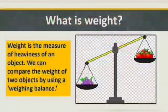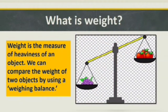What is weight? Weight is the measure of heaviness of an object. We can compare the weight of two objects by using a weighing balance. Look at this weighing balance — it has two pans. The pan which is at a lower level has more weight, and the pan at a higher level has less weight in comparison to the first one. Here, a bunch of grapes has more weight than four apples.